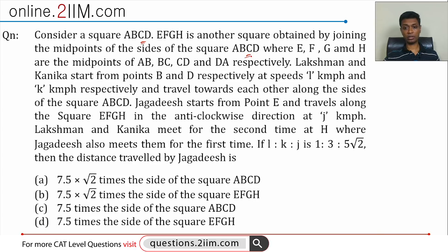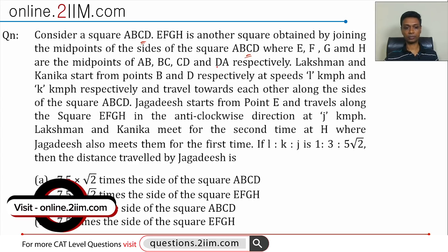EFGH are the midpoints of AB, BC, CD, and DA. At least the naming is standardized. Lakshman and Kanika start from points B and D respectively at speeds L and K, and travel towards each other along the sides of the square ABCD. They start at either end of the diagonal and then move towards each other along the square's sides.